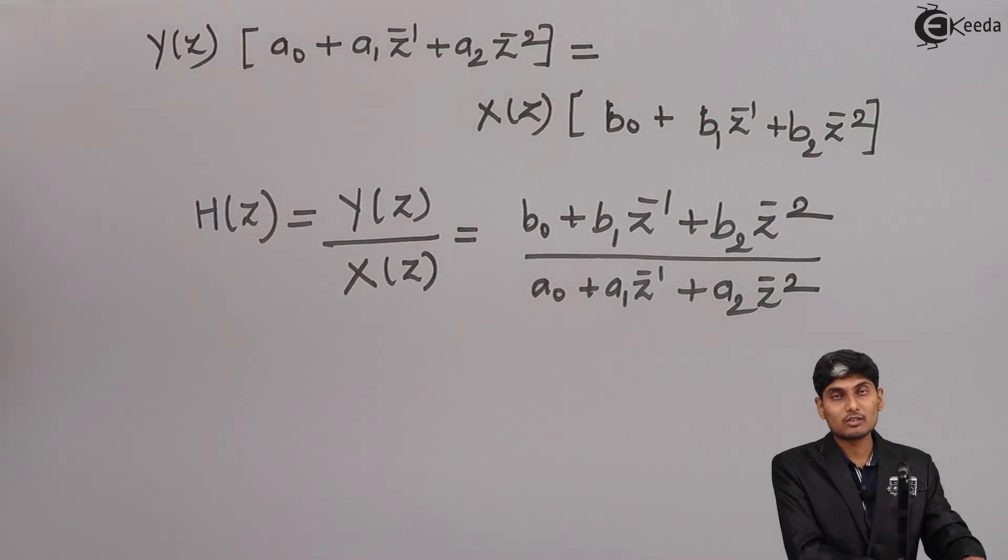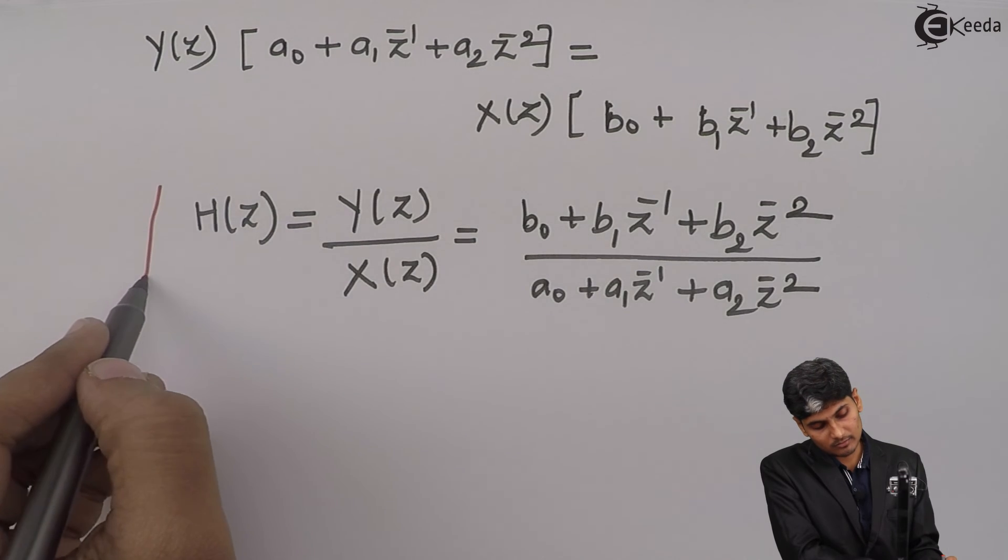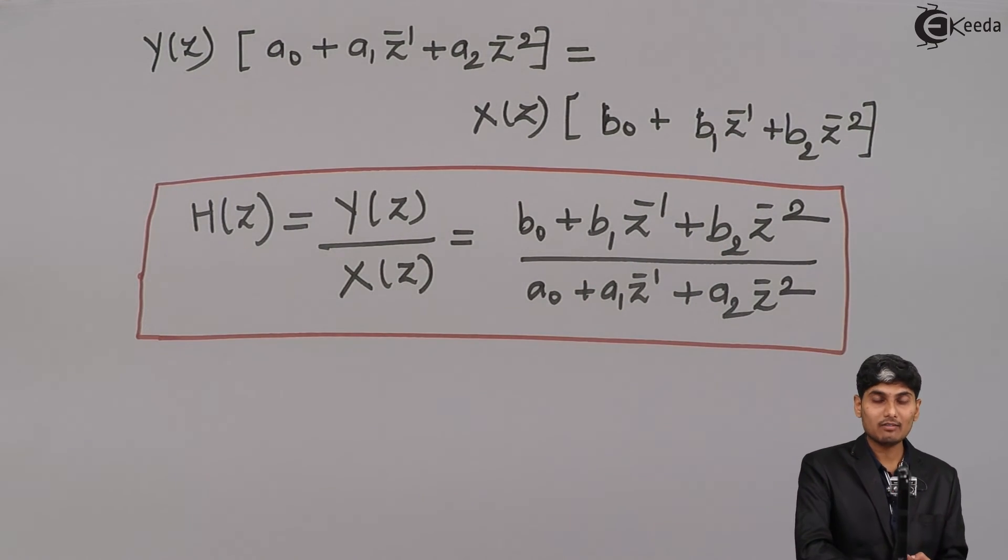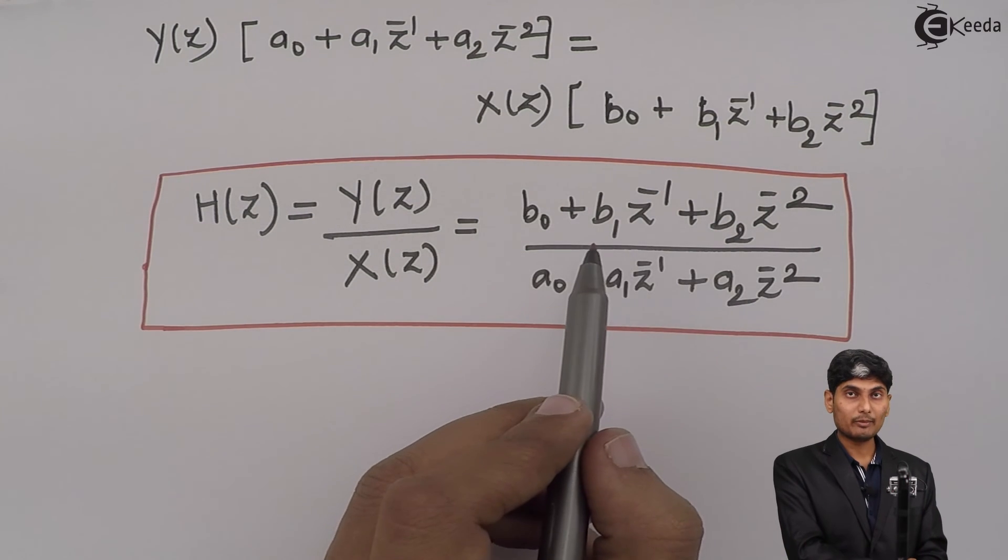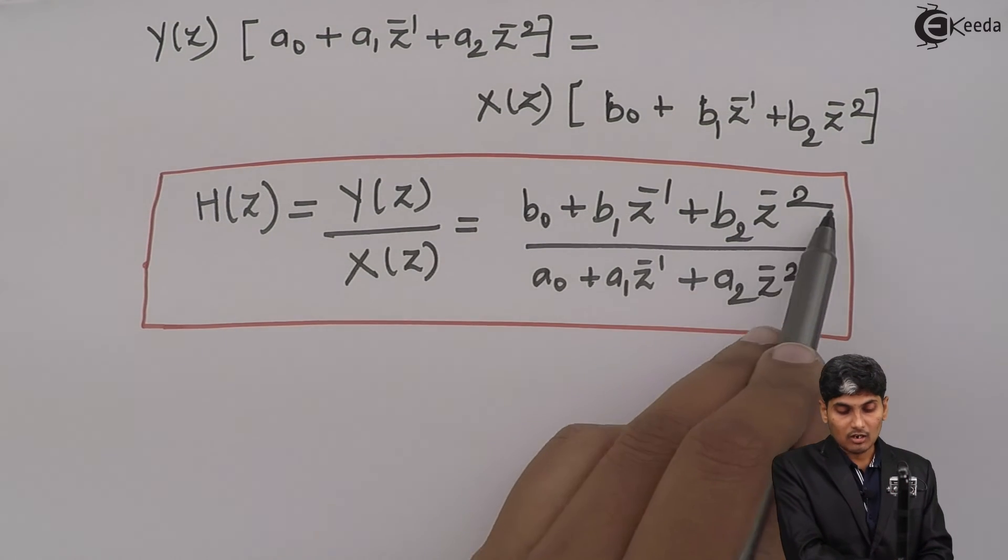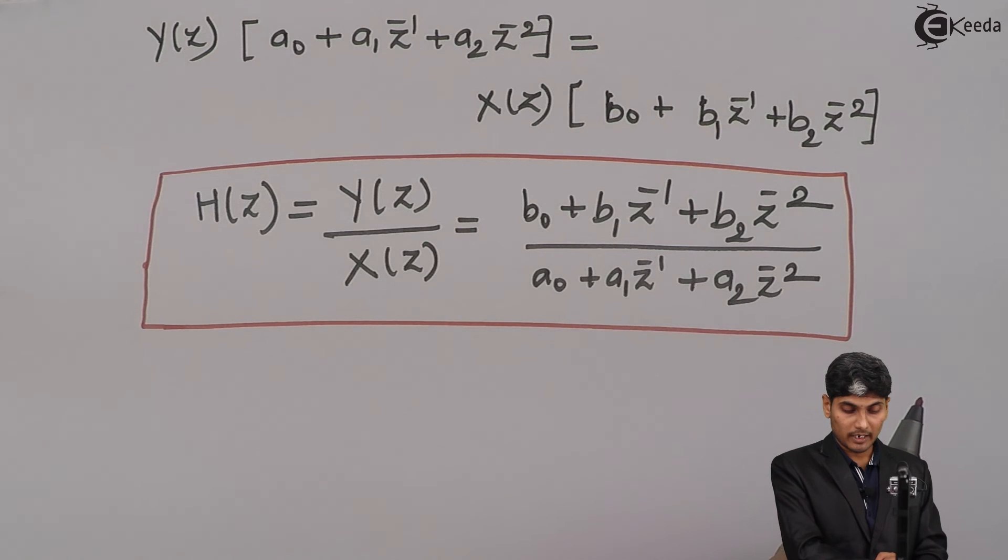So, this equation is called as a system transfer function where we have a numerator polynomial and we have a denominator polynomial with a degree 2.